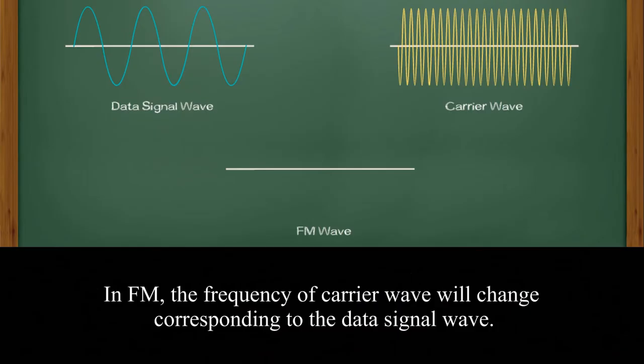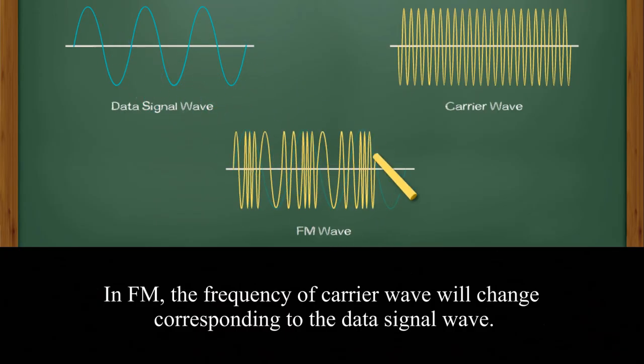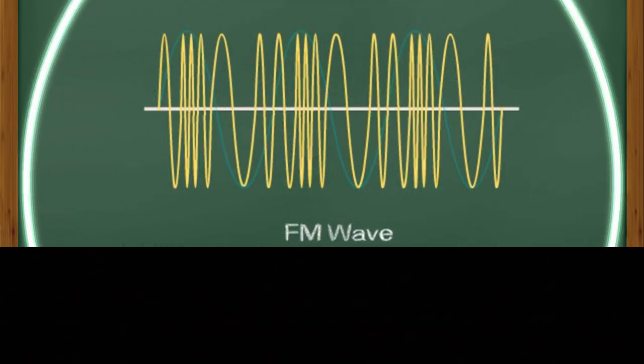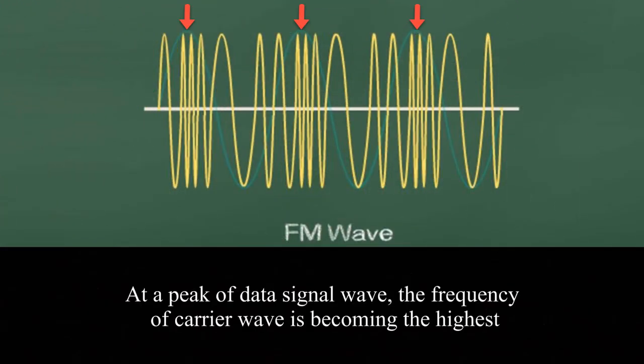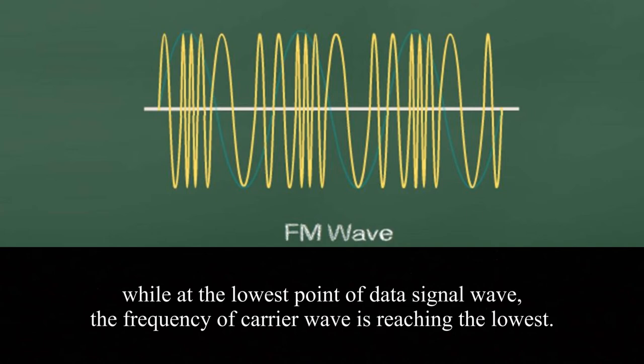In FM, the frequency of carrier wave will change corresponding to the data signal wave. At the peak of the data signal wave, the frequency of carrier wave is becoming the highest, while at the lower point of the data signal wave, the frequency of carrier wave is reaching the lowest.